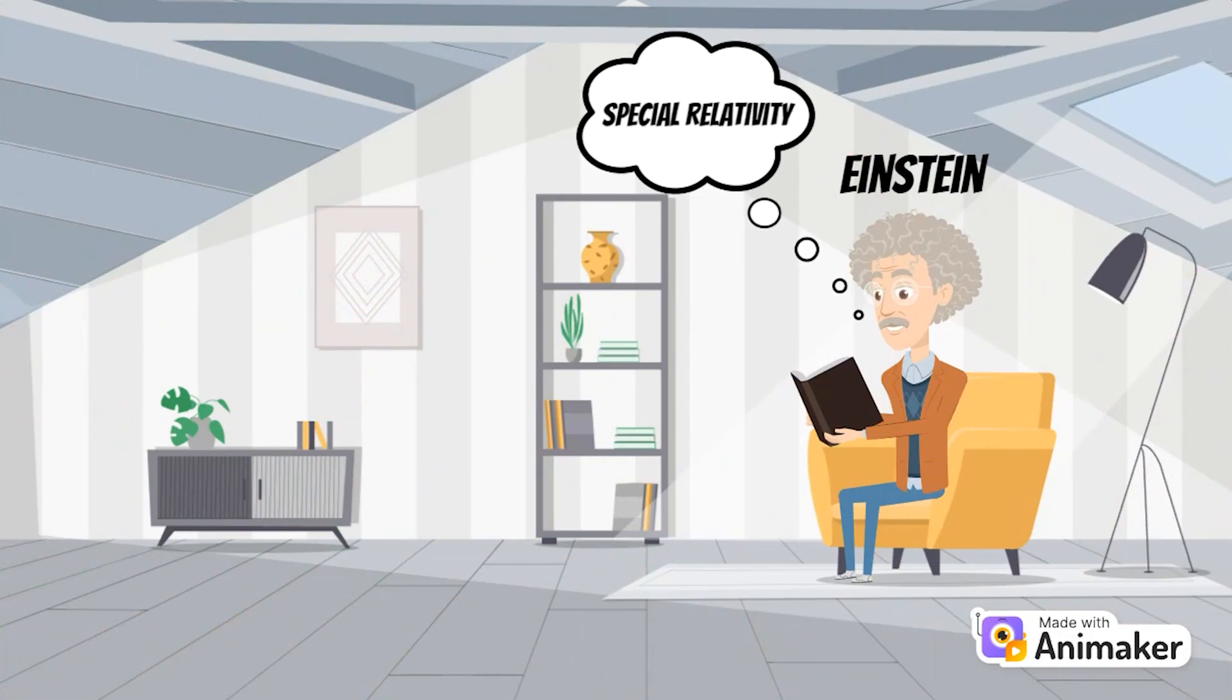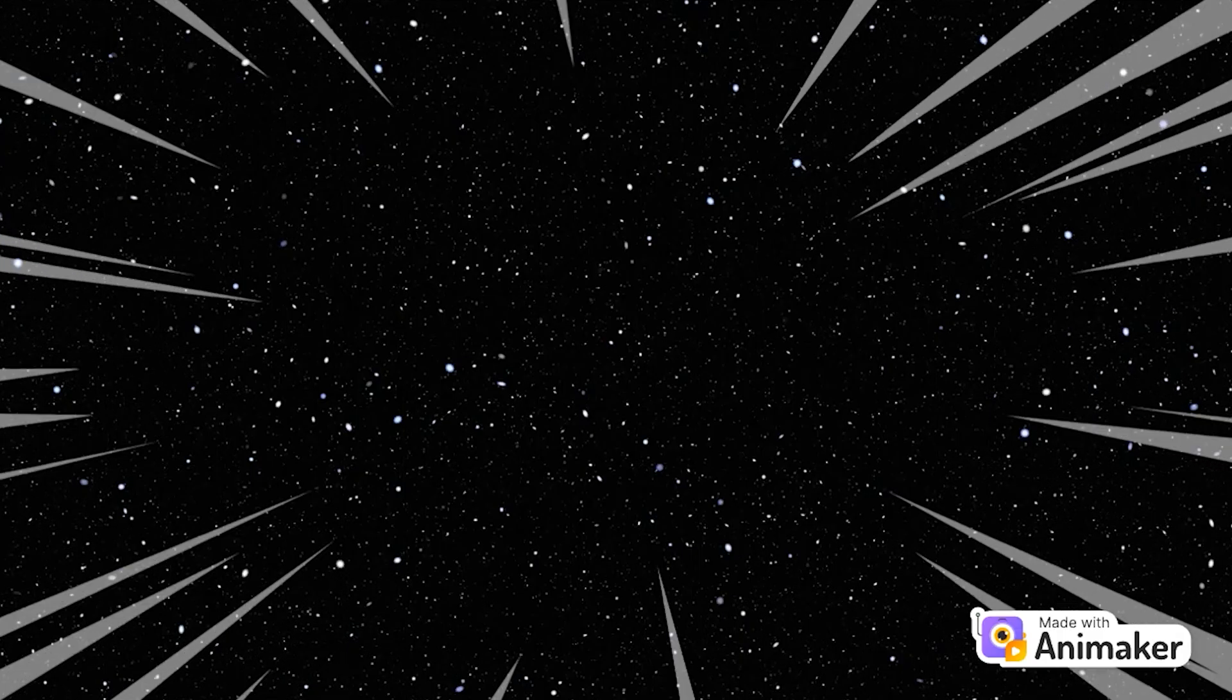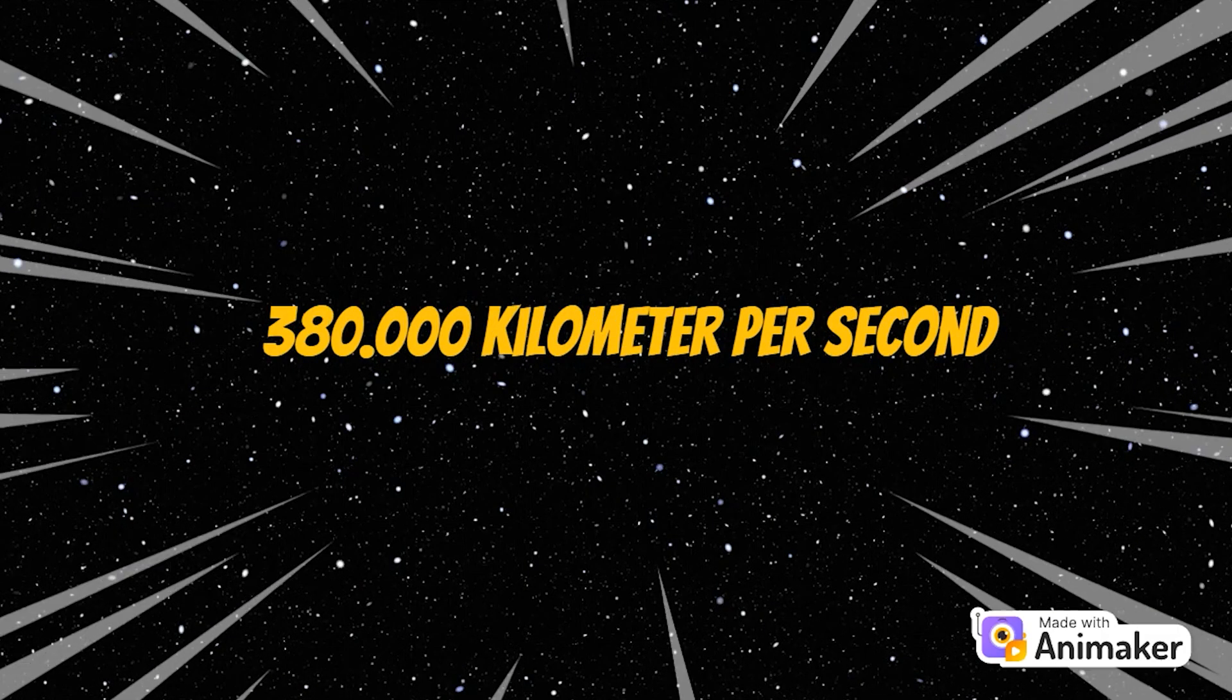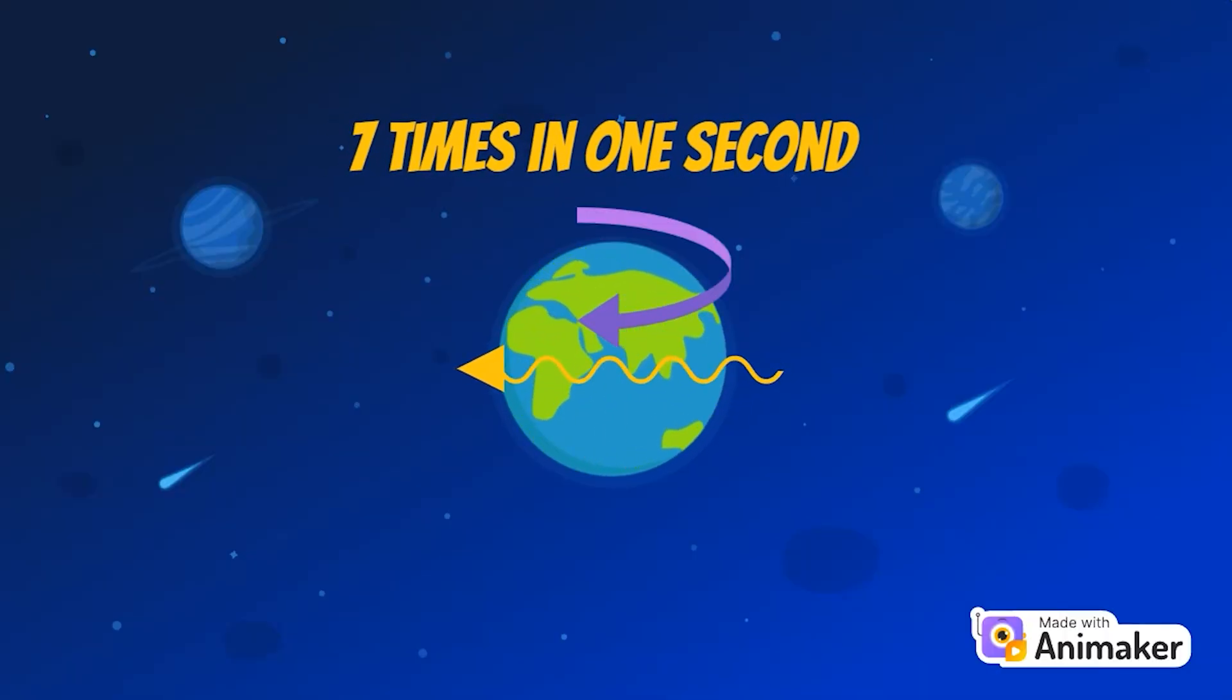We all know after Einstein's special theory that the highest speed in the universe is the speed of light. The speed of light in vacuum reaches 380,000 kilometers per second, which is really very fast. With this speed, we can go around the Earth seven times in one second.